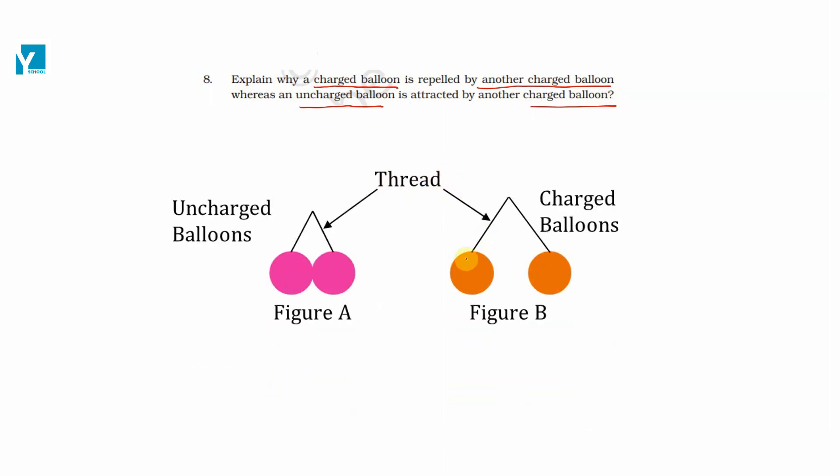This one is a charged balloon and this one is a charged balloon. And suppose we have a charged balloon and this one is an uncharged balloon. So here we have C for charged balloon, U for uncharged balloon, U-C and C for charged balloon.